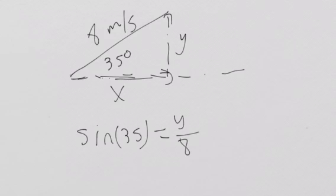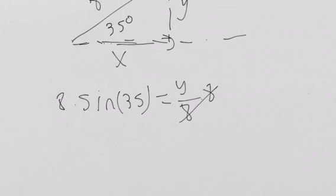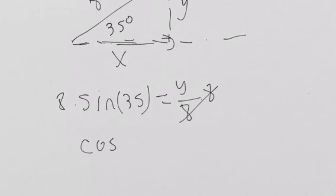Is going to be equal to y over 8. So what's y? y is just equal to 8 times sine 35. And then cosine of 35 is equal to x over 8, adjacent over hypotenuse. So then what's x? It's just 8 times cosine 35.